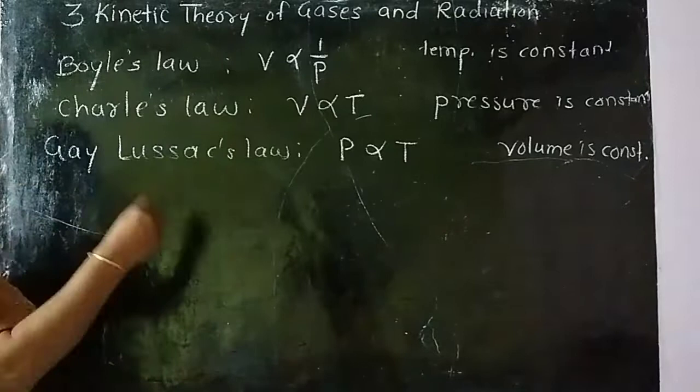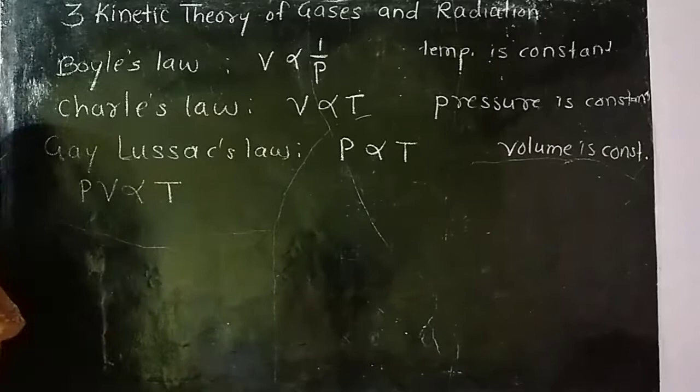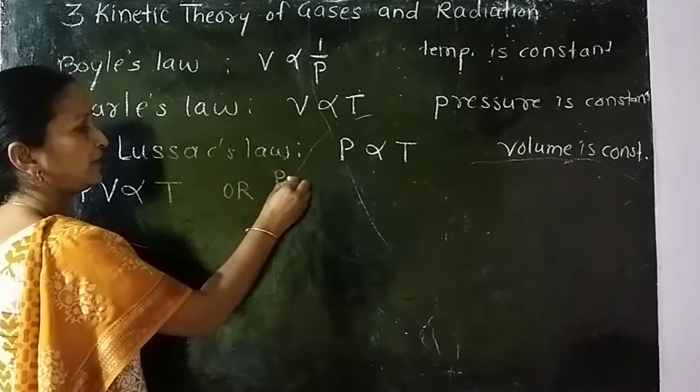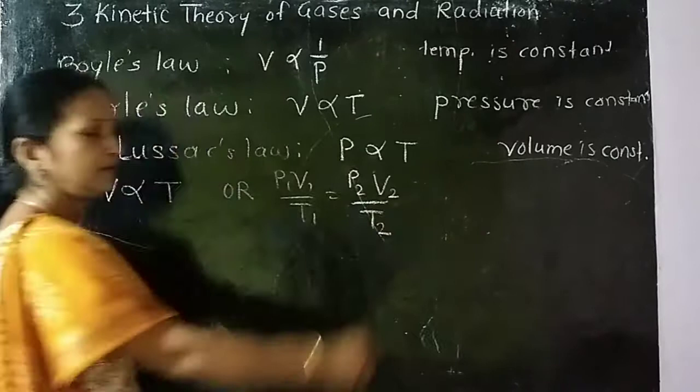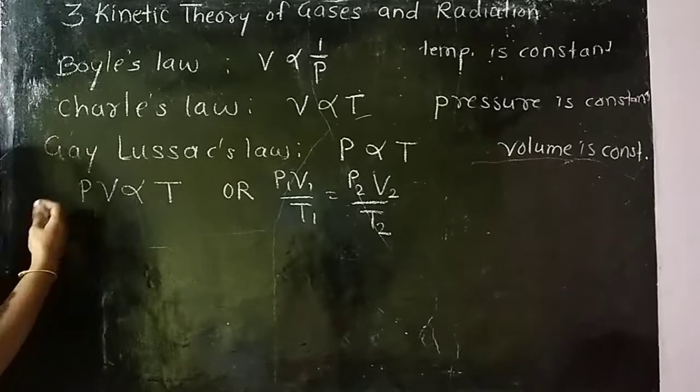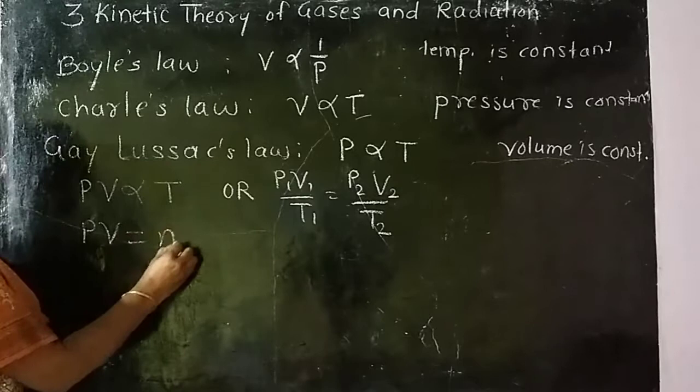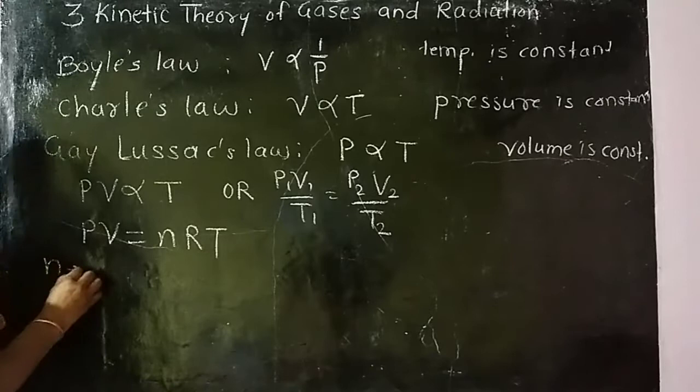If we combine these laws, we state that PV proportional to T. This can be written as PV by T equals constant. That is, P1V1 by T1 equals P2V2 divided by T2. This equation, by including mass and number of molecules, can be written as PV equals NRT, where N is number of moles.